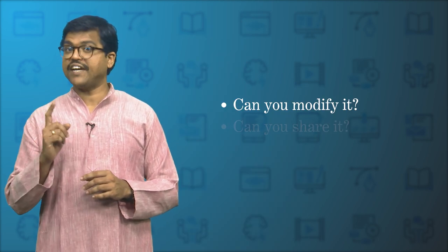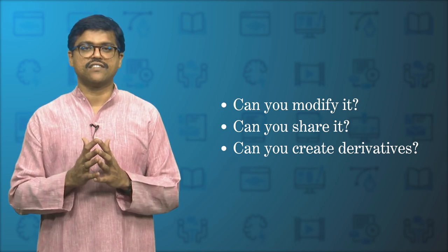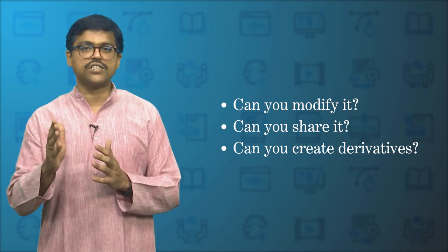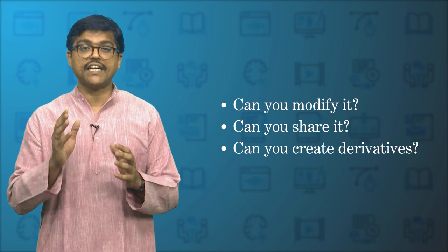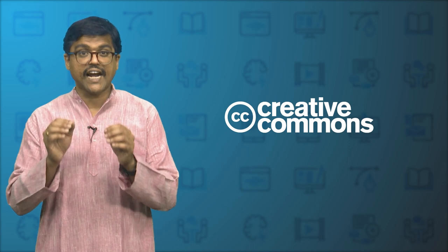But wait, isn't there already free content online? Is there a significant difference between free and open access content? While freely available content might exist, it often lacks the clear licensing terms that define how you can use it — can you modify it, share it with others, create derivative works? Open educational resources addresses these by adhering to open licenses like Creative Commons, which explicitly grant these rights.